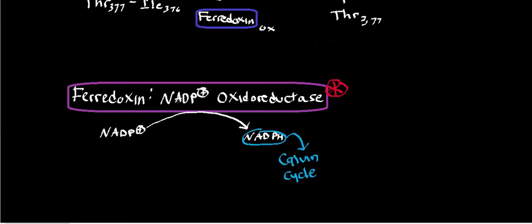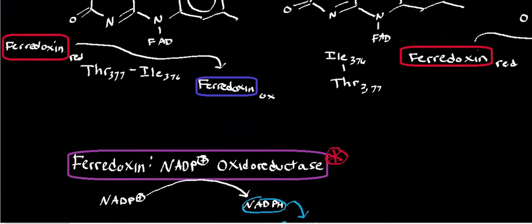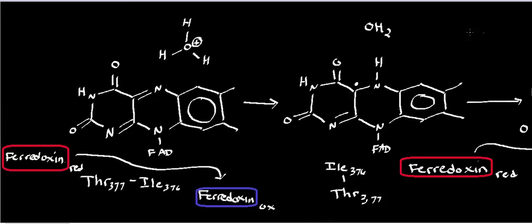So now we've got this enzyme — let's see how it works. As we said in the last video, this enzyme requires a totally reduced ferredoxin. Remember, ferredoxin is an iron-sulfur protein. So the iron-sulfur coenzyme is going to transfer its electrons ultimately through a series of amino acids that are part of this oxidoreductase.